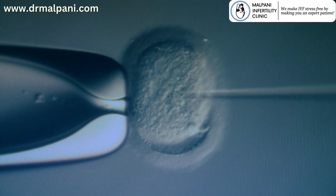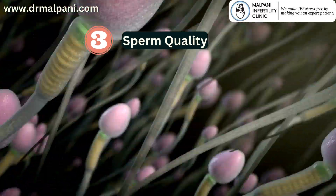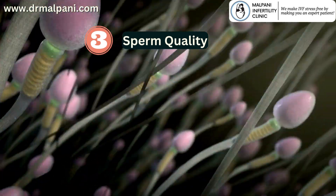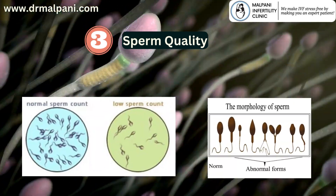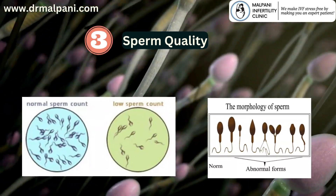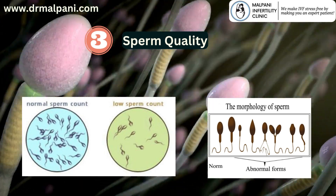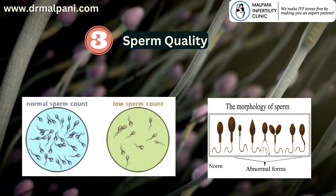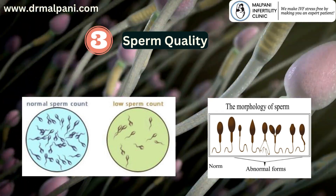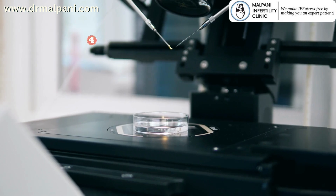3. Sperm quality. Poor sperm quality can lead to embryos with compromised development. Abnormalities in sperm count, motility, and morphology can all contribute to this issue.